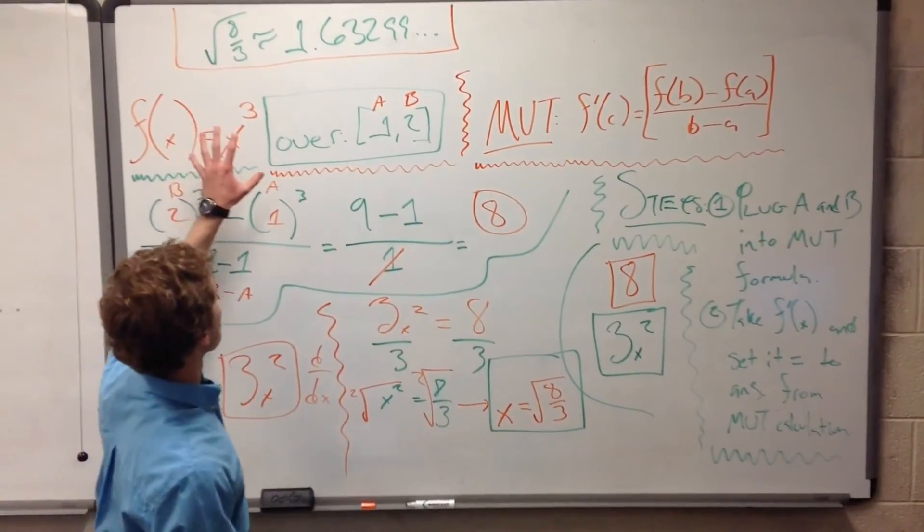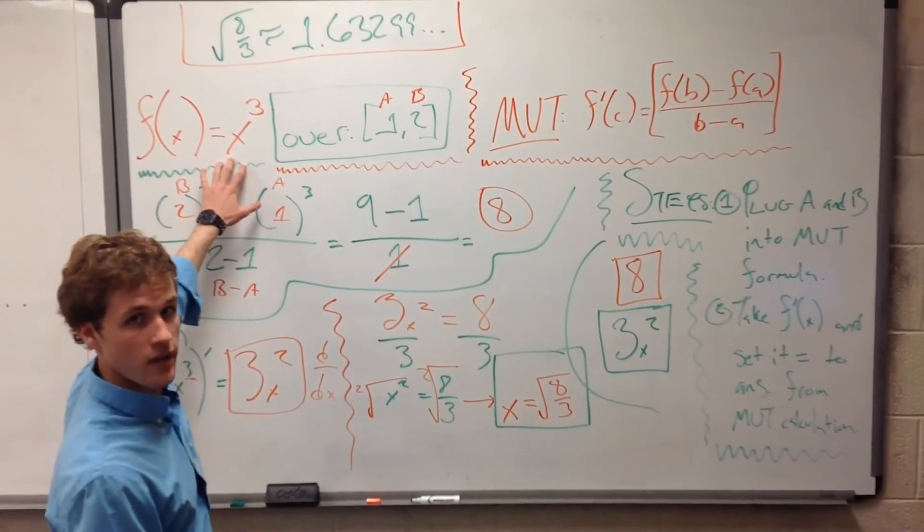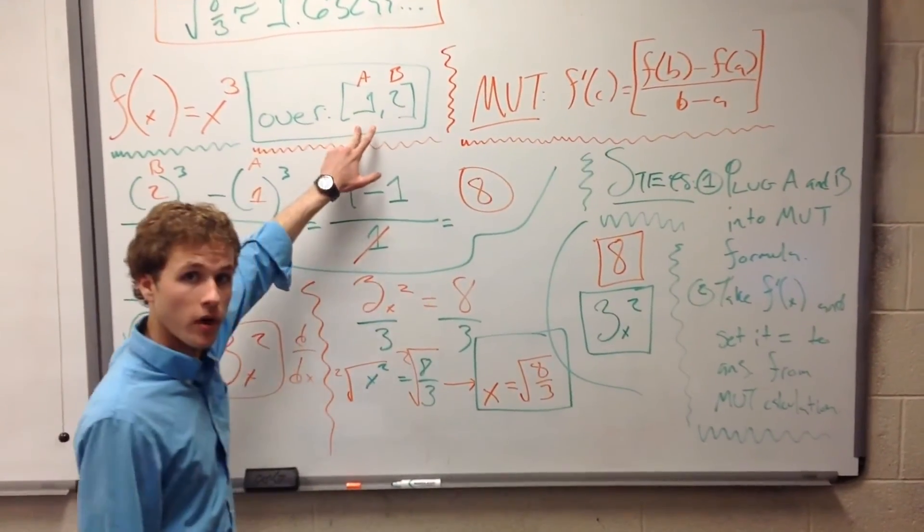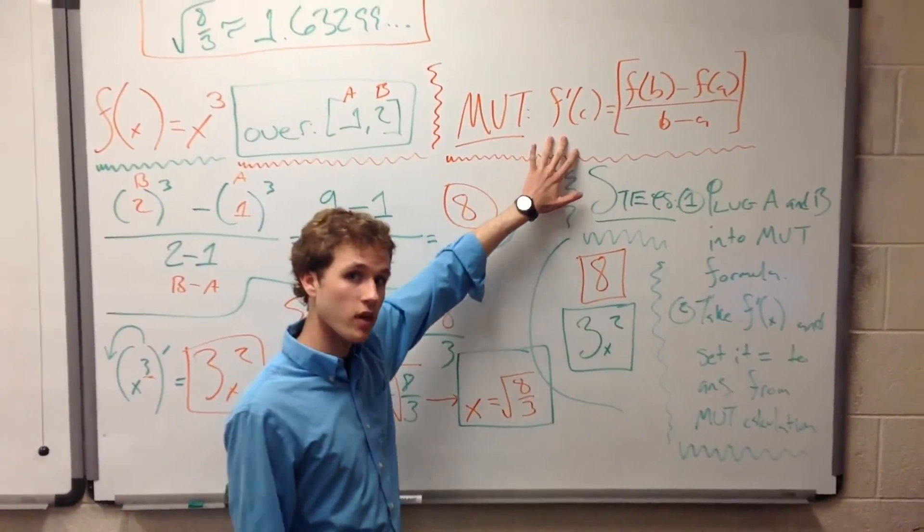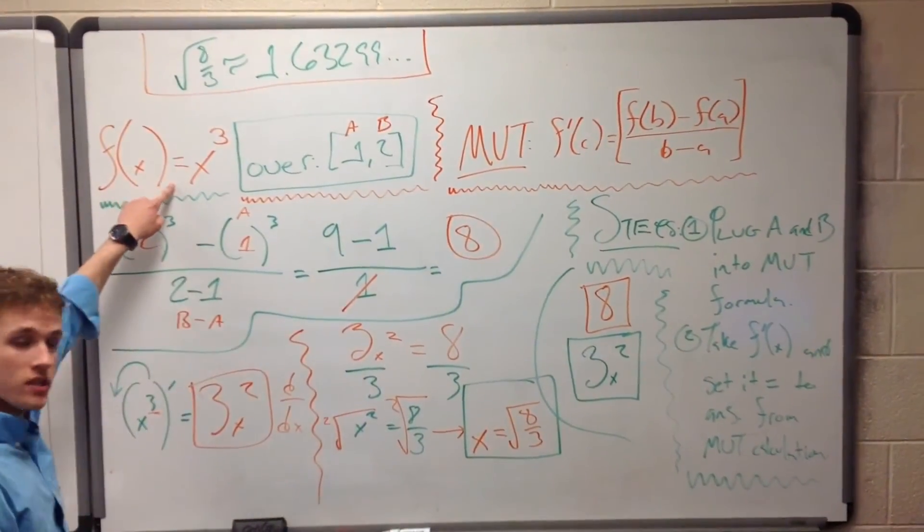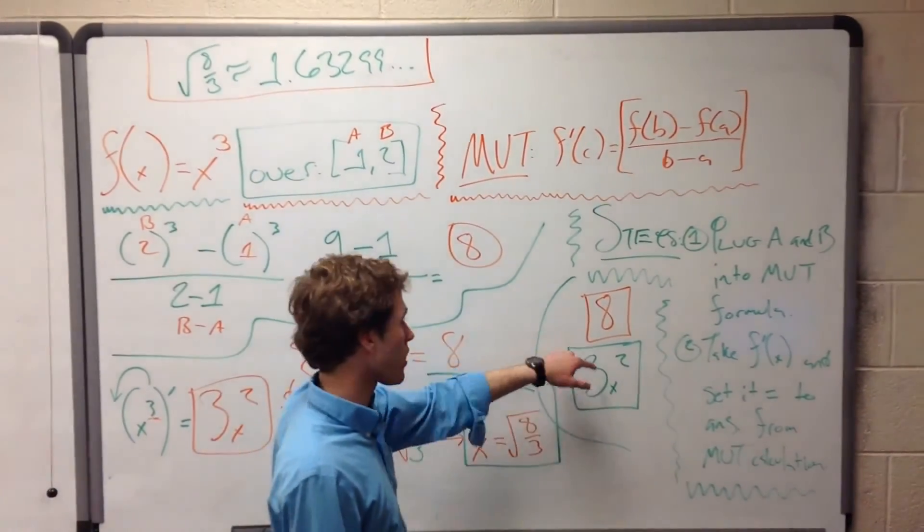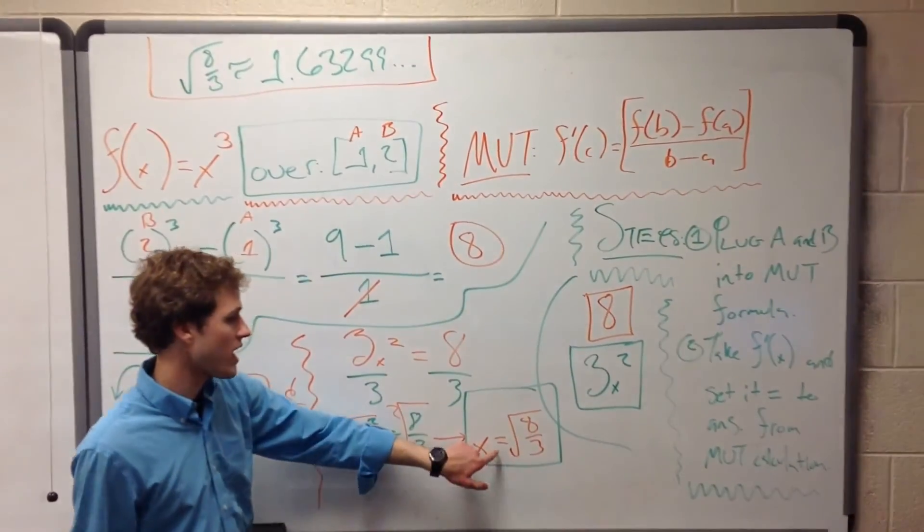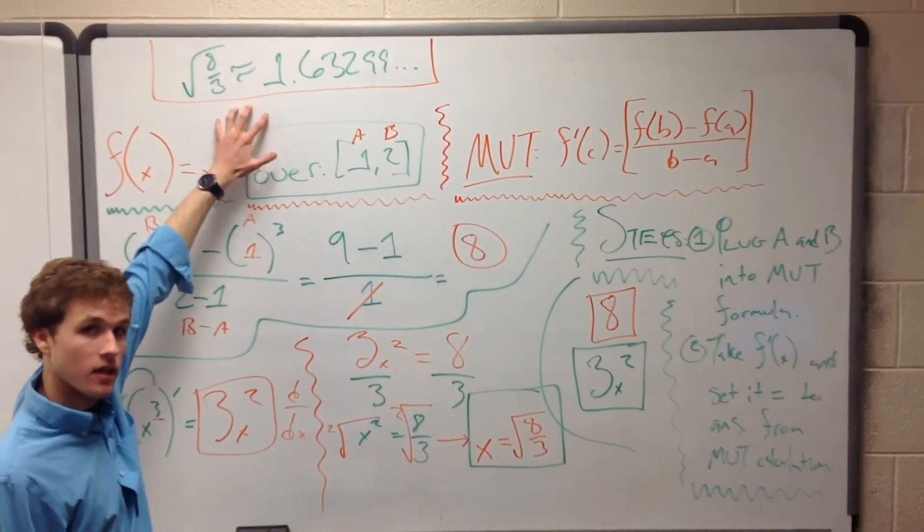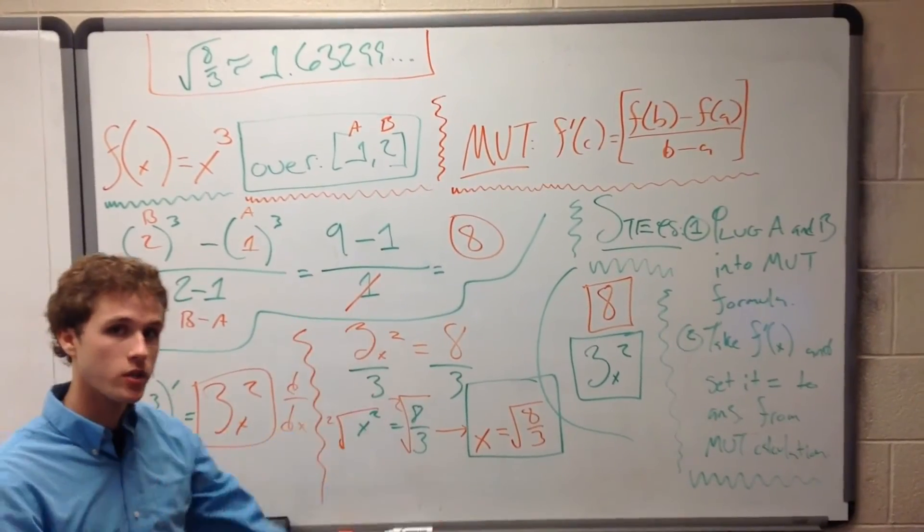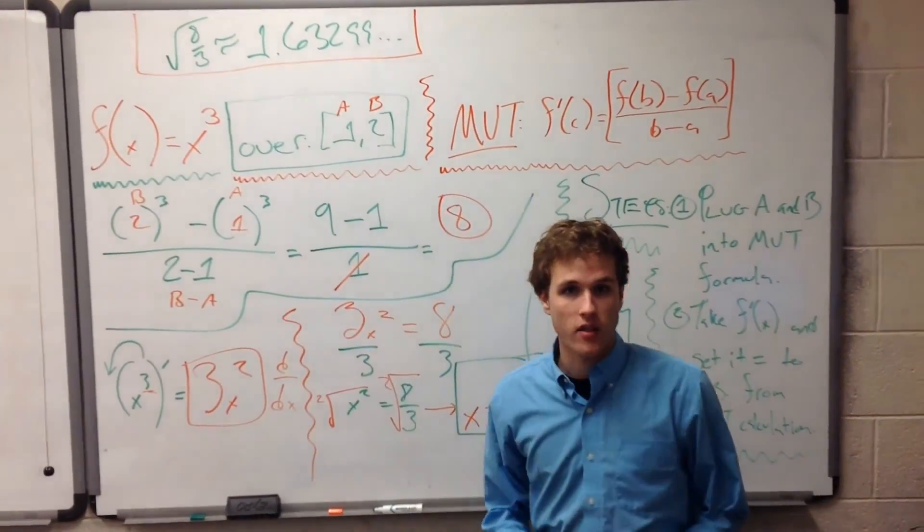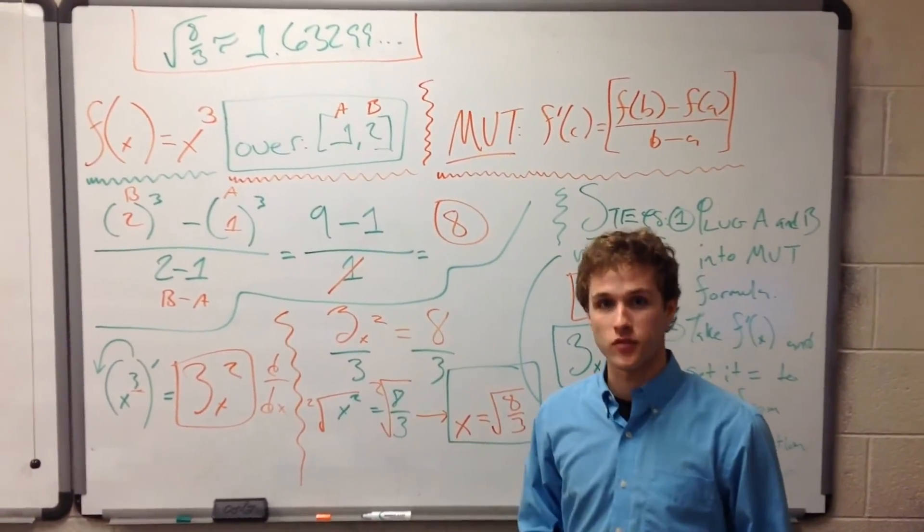So a quick recap. We took our original equation, f(x) = x³. We plugged in B and A, which is from our interval [1, 2], into the mean value theorem formula. We got that 8 was the answer. We took prime of this, which was 3x². We set 8 equal to 3x² and got that x is equal to √(8/3). And we took a decimal approximation of that, which is 1.63299, with a lot of numbers after it. So that is how you would apply the mean value theorem to a simple exponential function.